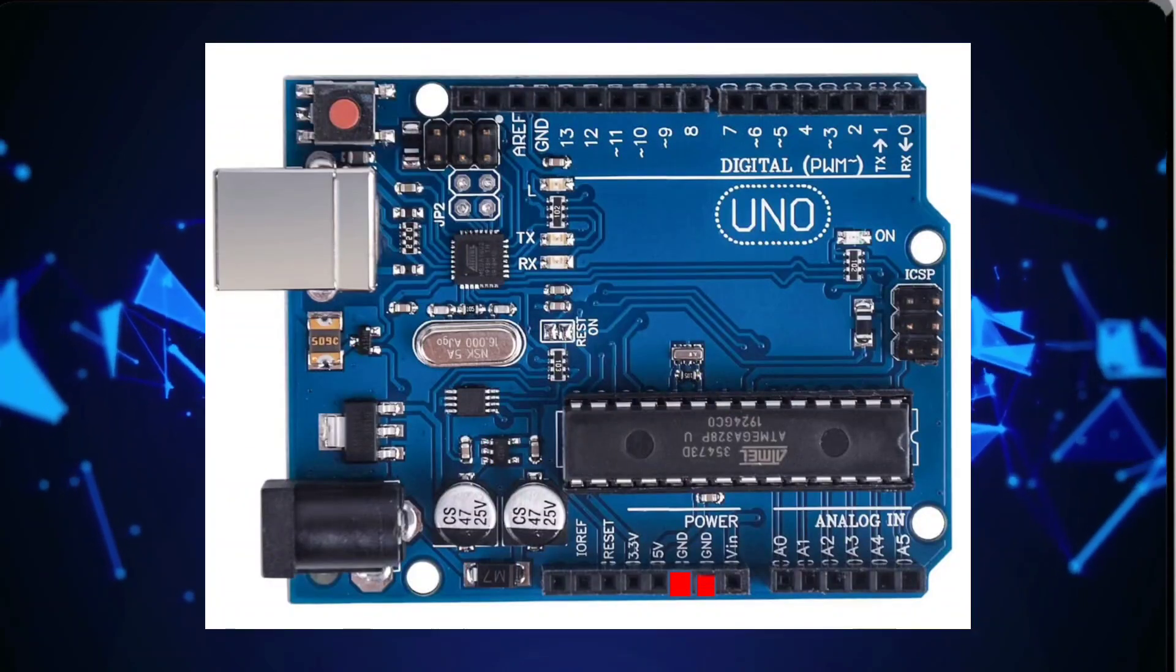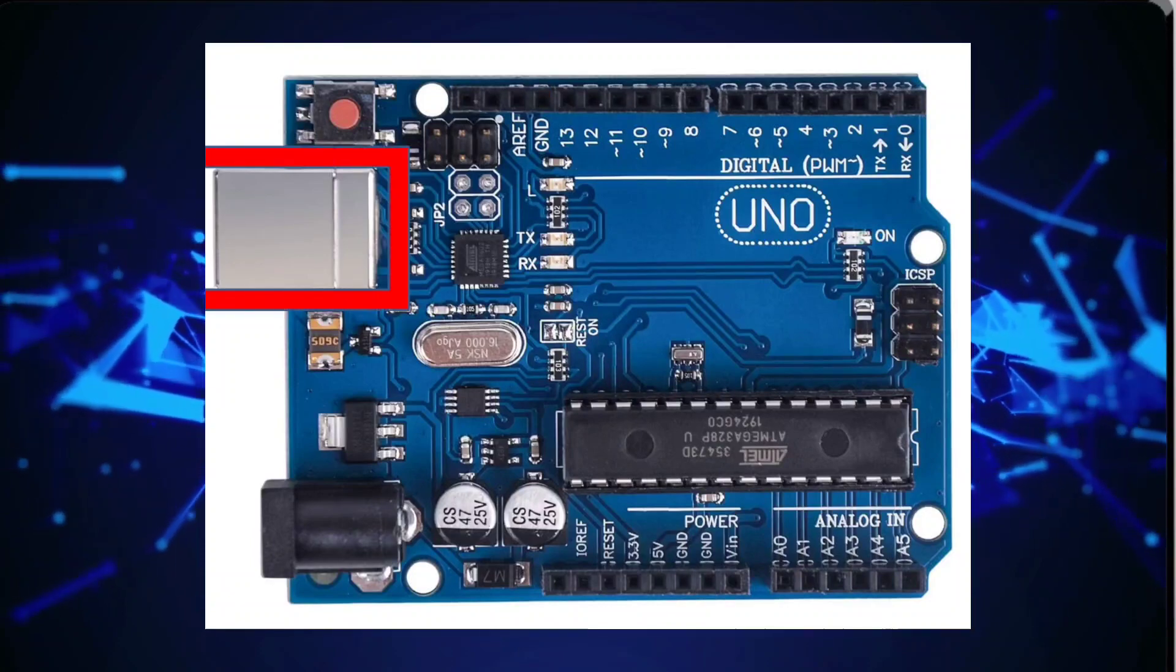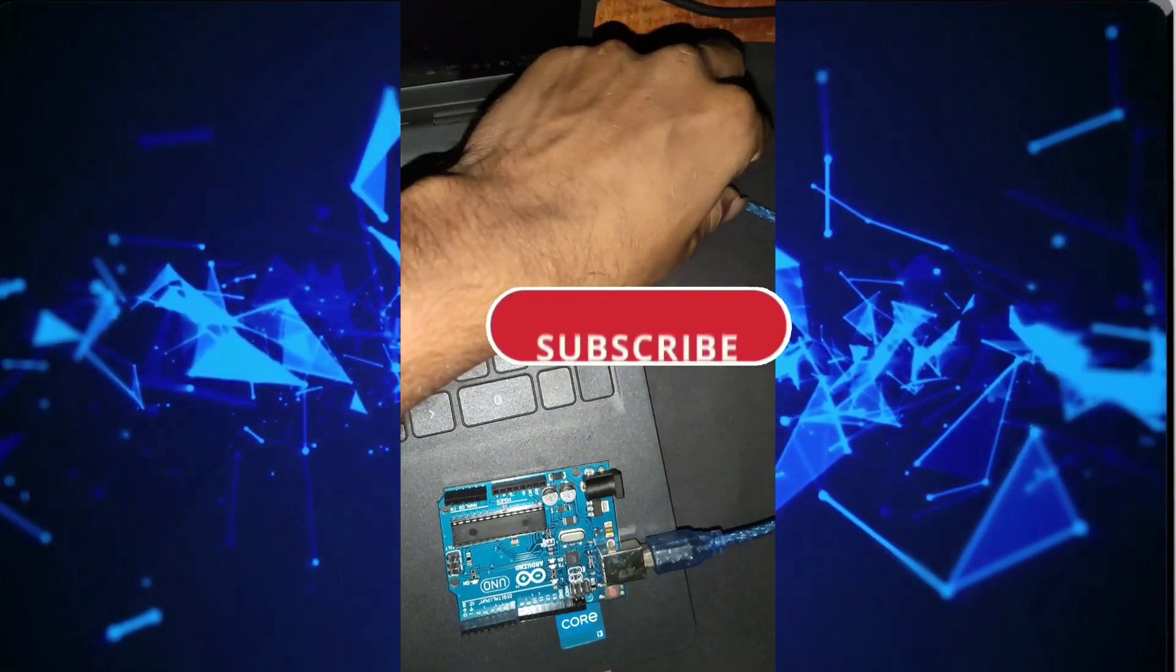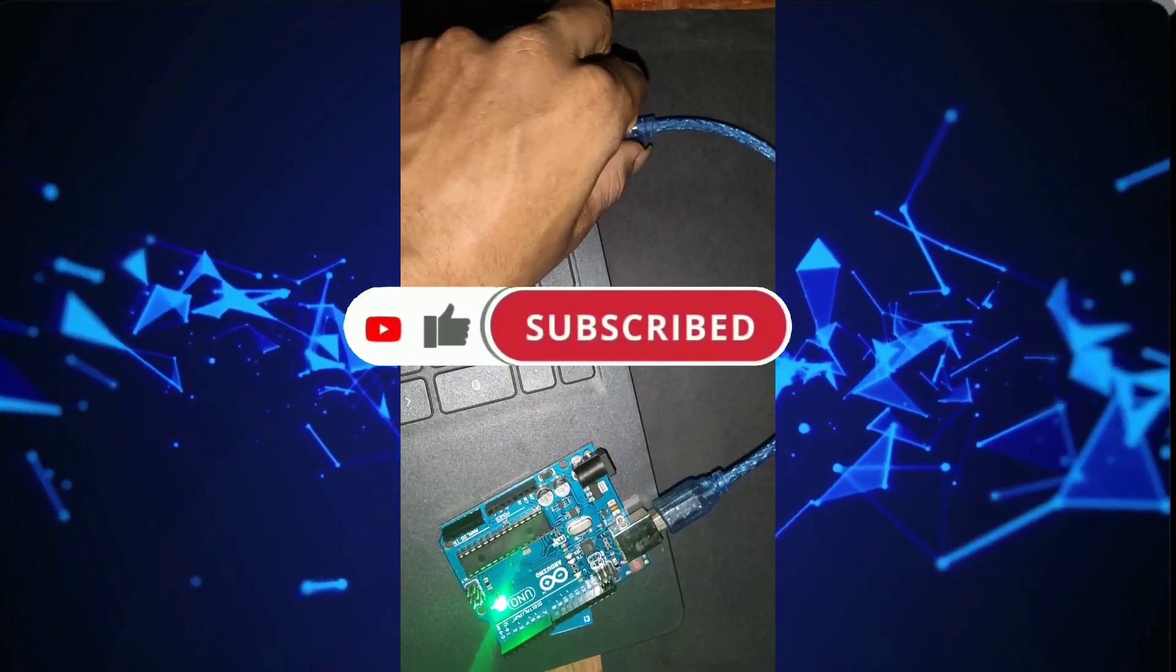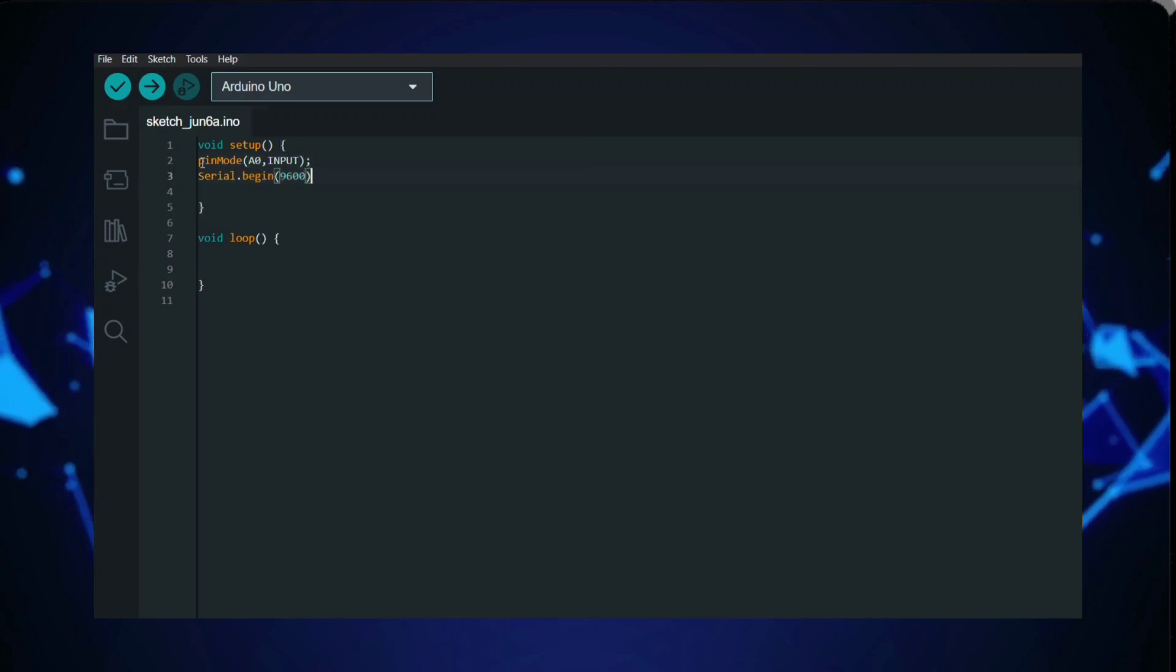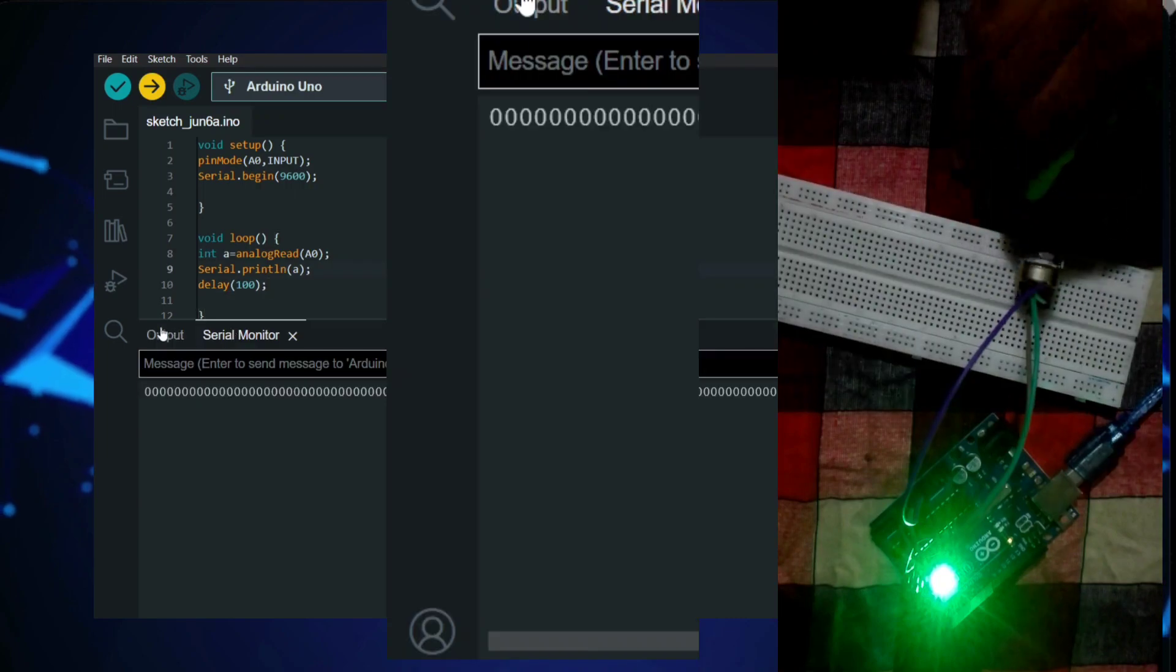Arduino Uno features a USB port for connecting to a computer, allowing for programming and communication between the board and the computer. Arduino Uno incorporates a USB interface which facilitates easy communication with a computer for programming, uploading sketches, and serial communications.